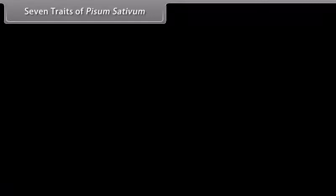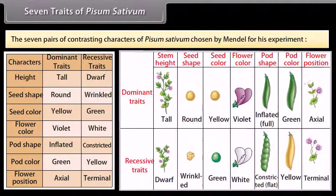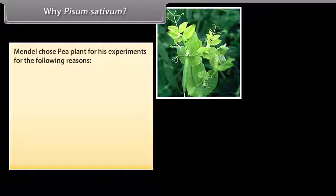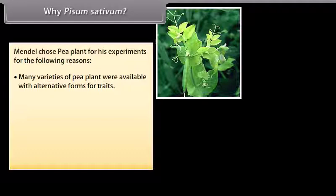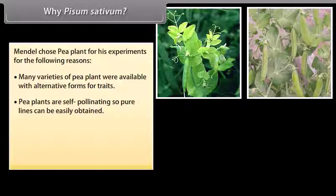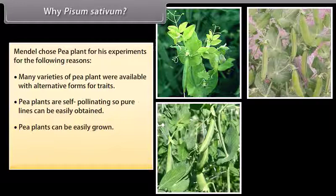The seven pairs of contrasting characters of Pisum sativum were chosen by Mendel for his experiment. Mendel chose the pea plant for the following reasons: many varieties were available with alternative forms for traits; pea plants are self-pollinating, so pure lines can be easily obtained; they can be easily grown; they have a short life span; and their flowers are bisexual.